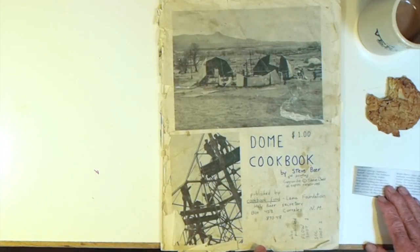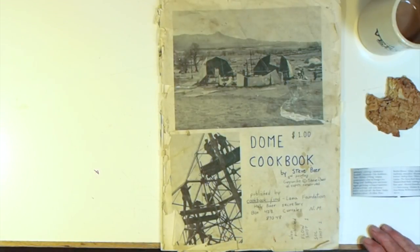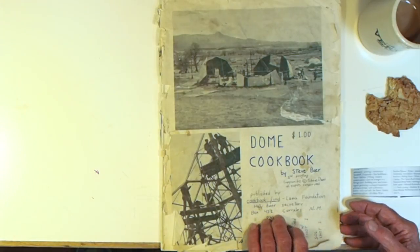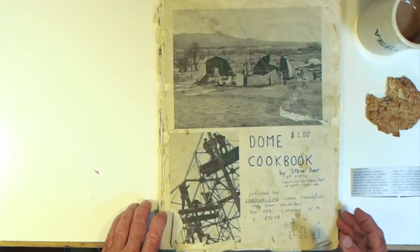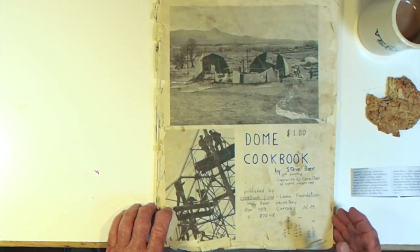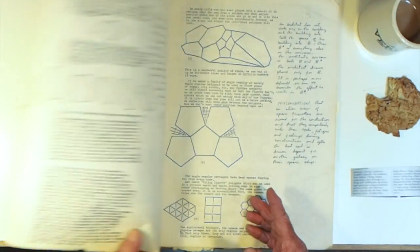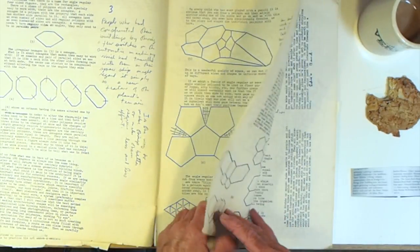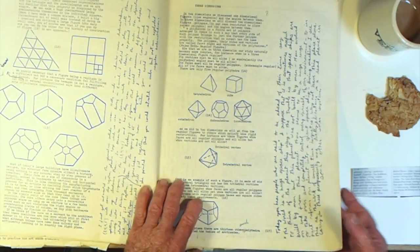In 1967, I guess it was, a friend of mine gave me this book here, The Dome Cookbook by Steve Baer. It cost $1, and it was a story of building domes in New Mexico out of chopped-out car tops at Drop City. And so Steve had put together this book, and when I looked at this book, it was just done on a typewriter with handwriting. He'd just drawn crude graphics in it.